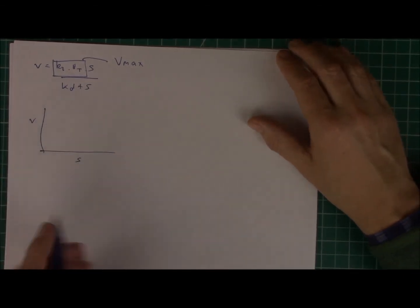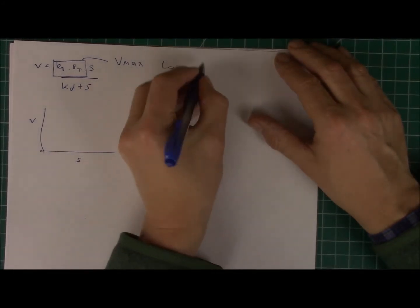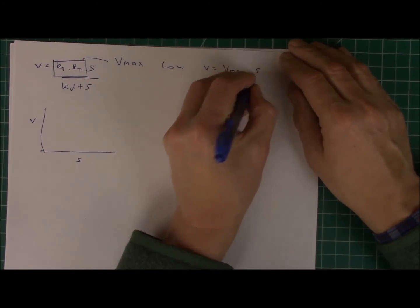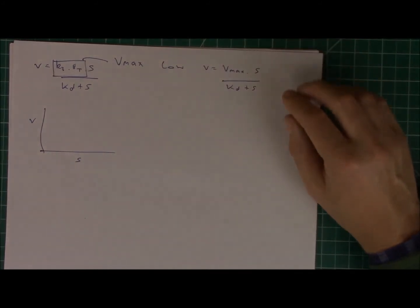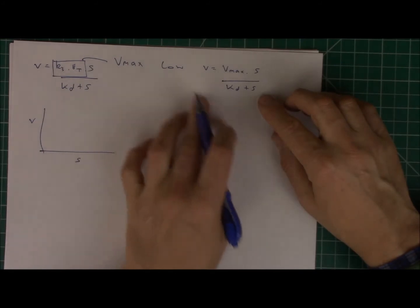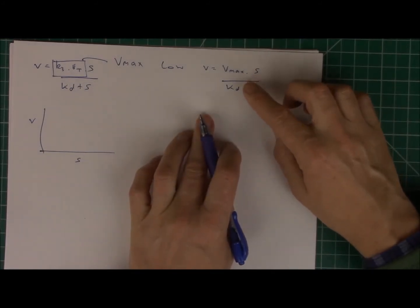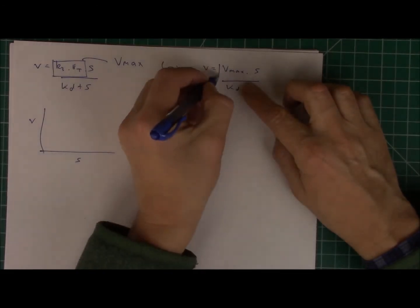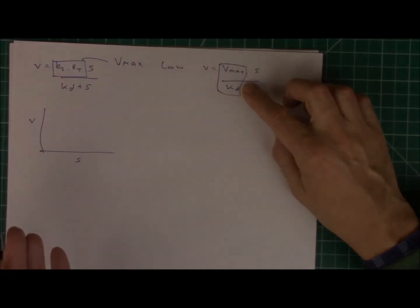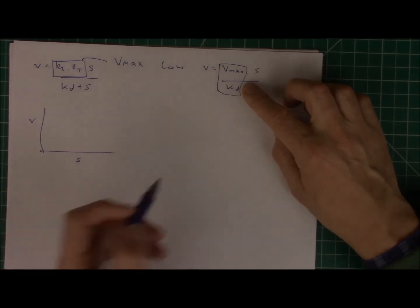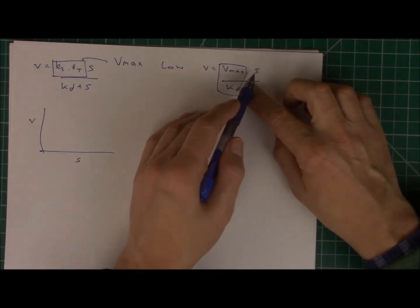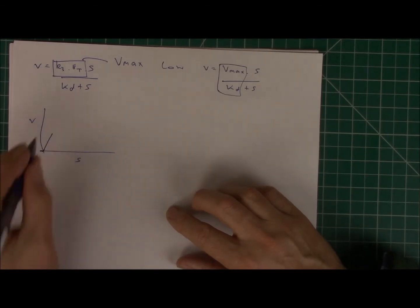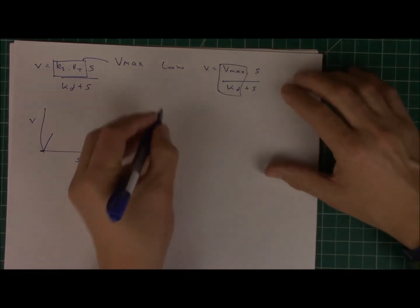So what happens at low S? So let's consider low S. So I'll call that Vmax S over KD plus S. At low S, this S is so small that KD dominates the denominator. So I have basically a constant here times S. That's a first order reaction. In other words, the reaction velocity is directly proportional to V. So at low S, I'll get some kind of straight line.